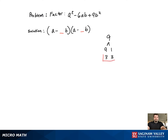Since we need to get a 6 for the middle term in the trinomial, we will pick the pair of 3s. And there is the final factored version of the trinomial.